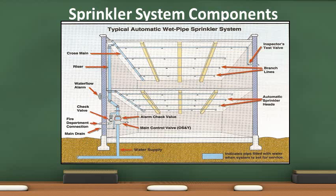The water then travels to the alarm check valve or flow switch. The flow switch is not shown in the diagram. The alarm check valve and flow switch sound a local alarm indicating water is flowing through the system. The riser carries the water up into the cross main. The cross main carries the water to the branch lines, which carries water to the sprinkler heads. The main drain releases water from the system for maintenance purposes. The inspector's test valve is located at the most remote portion of the sprinkler system and allows a qualified inspector to conduct tests to ensure the water flow alarm activates within 45 to 90 seconds.